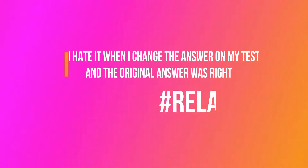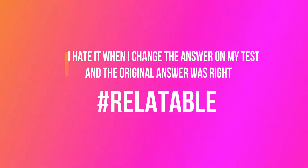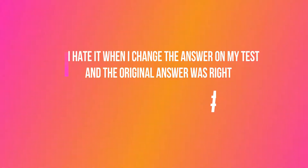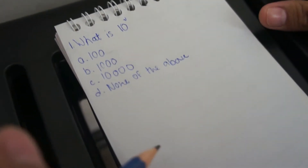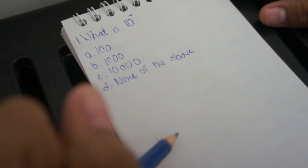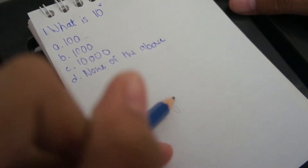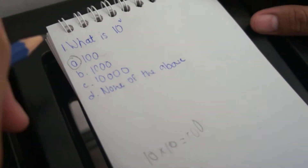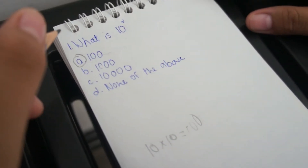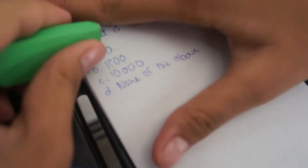Okay class, turn your books to page 65. Okay, this question: 10 times 10 — it was 100, so let's circle 100. Wait a minute, isn't the 0 and the 10 included? Maybe it's 1,000, so let's change the answer.